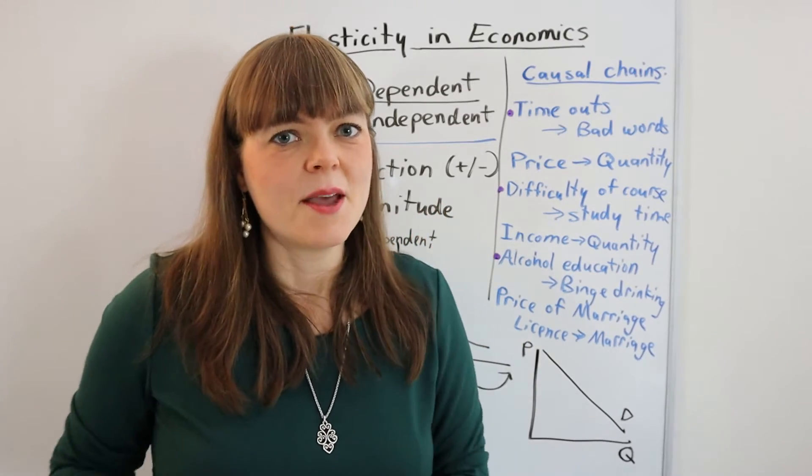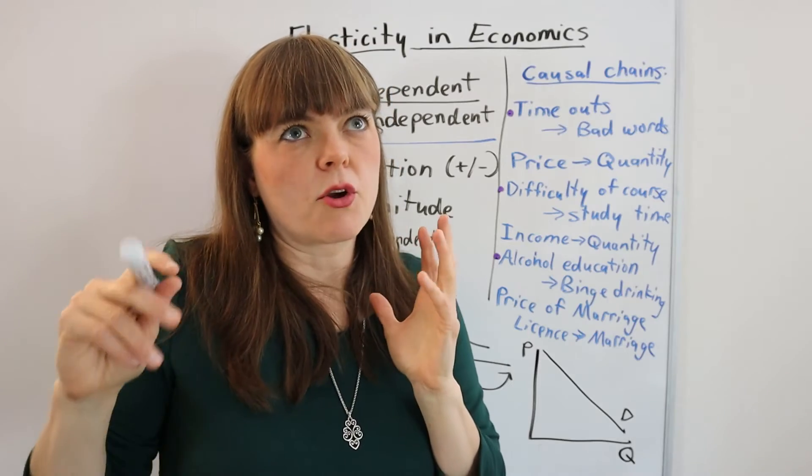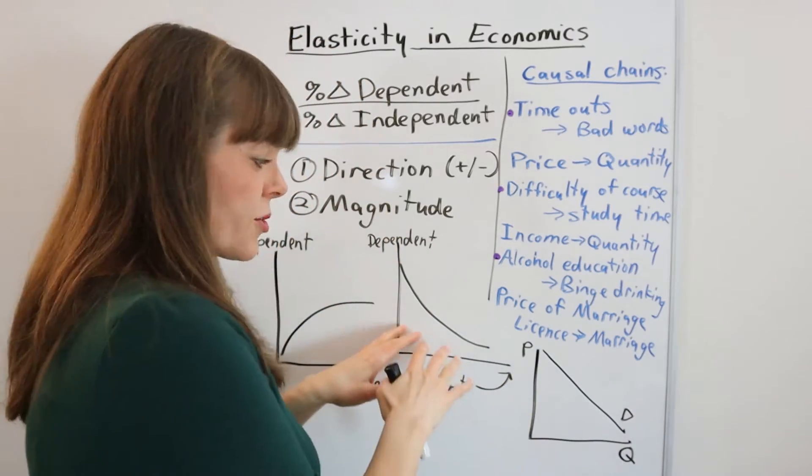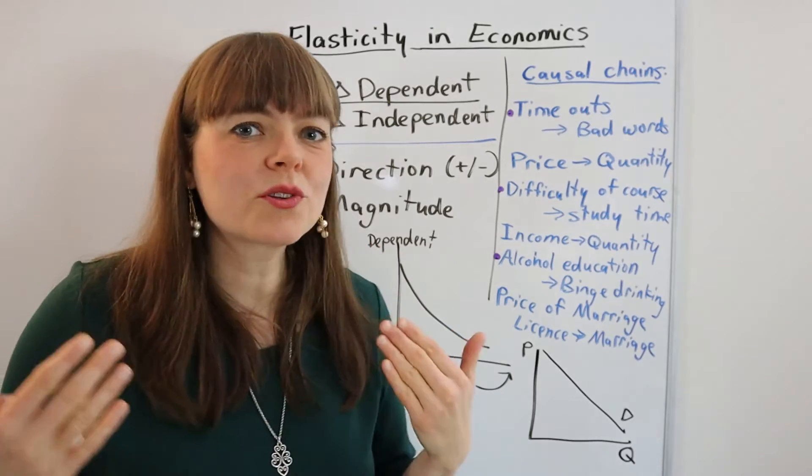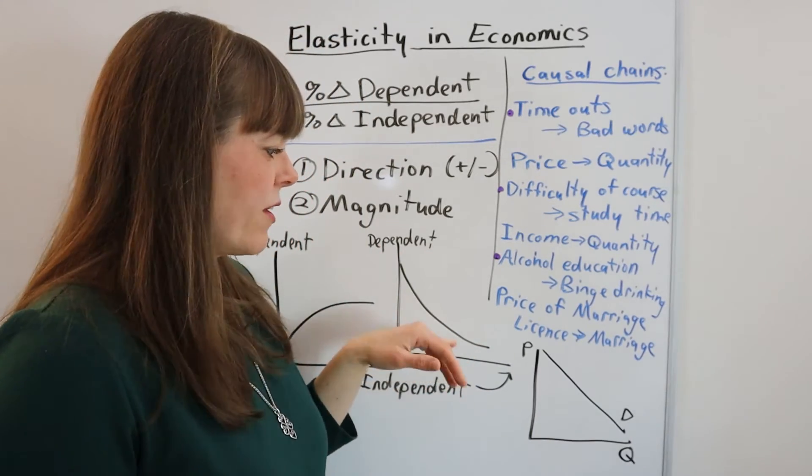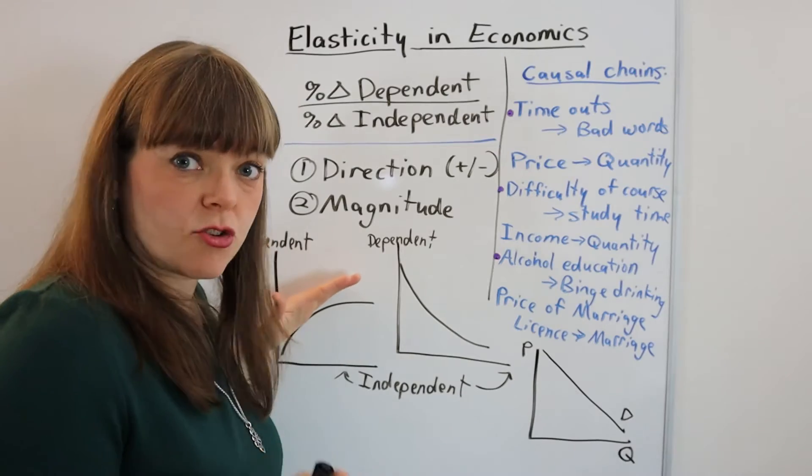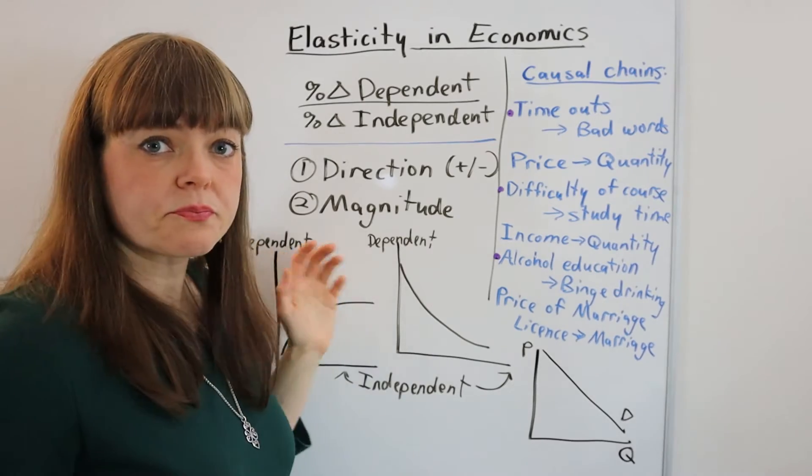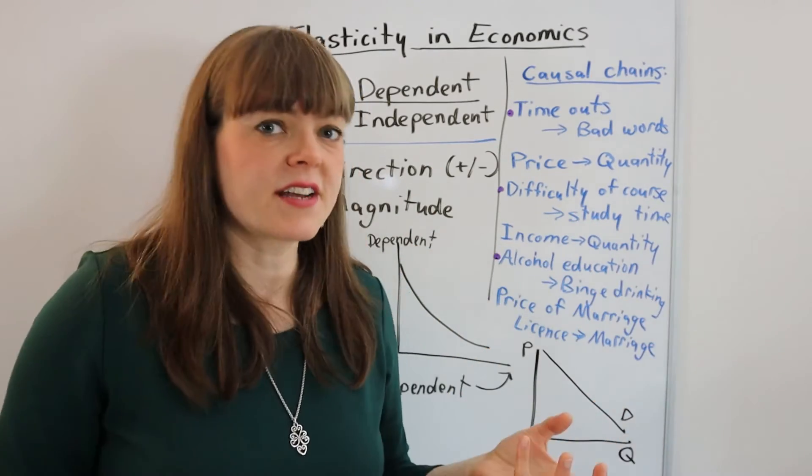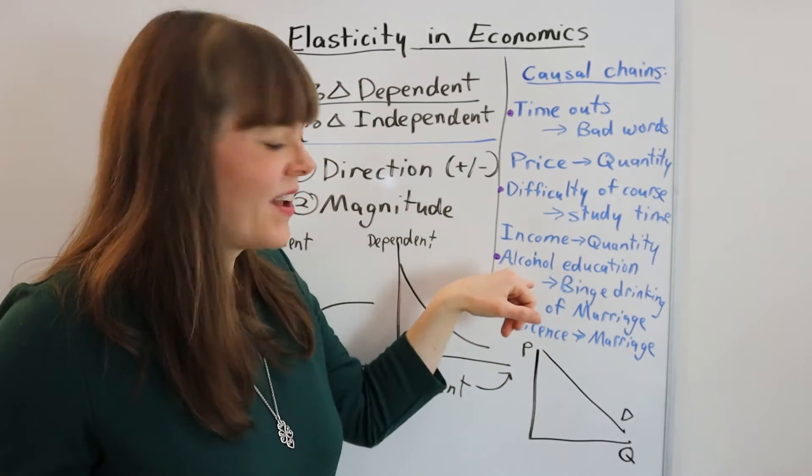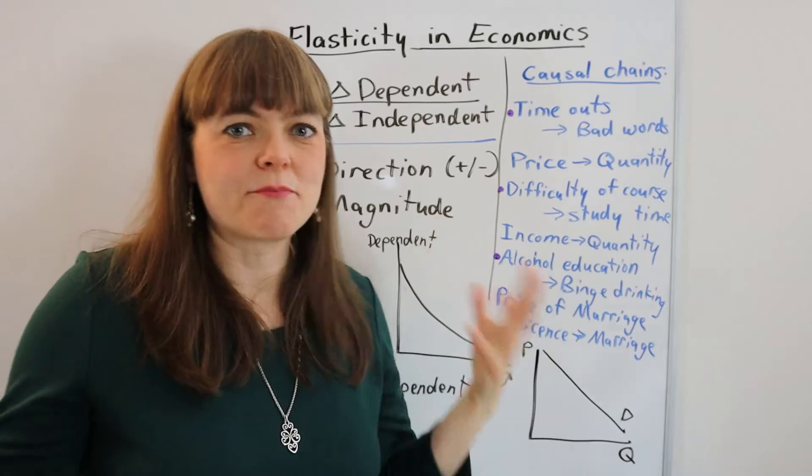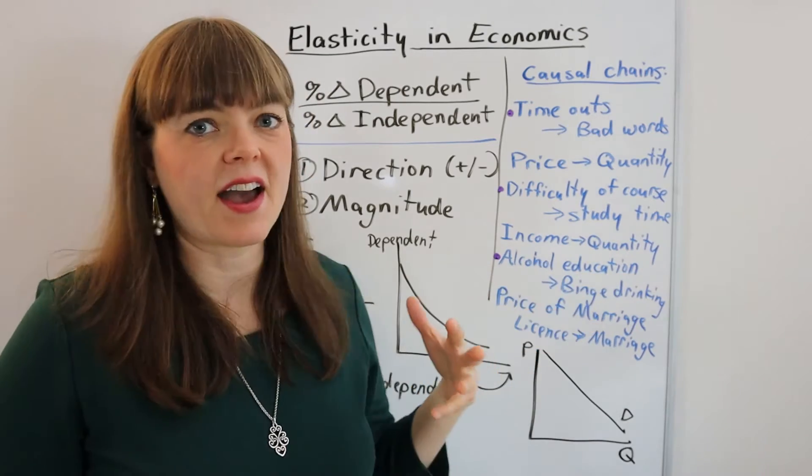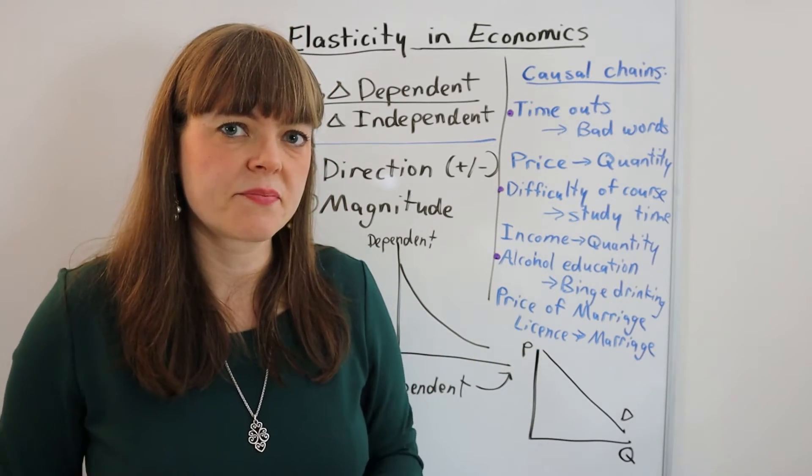So this concept is really important in economics, because it's how we map data and causal relationships that we observe in the real world onto our theoretical models. And it's how we hold our models in check with reality. Like if we think the elasticity is fairly strong, like there's a fairly strong response in a variable when we change the independent variable, but we go out there in the real world and measure it and there's no response whatsoever, kind of like with the alcohol education and binge drinking example, then hopefully the economists are going to update their model levels to account for that near zero elasticity.